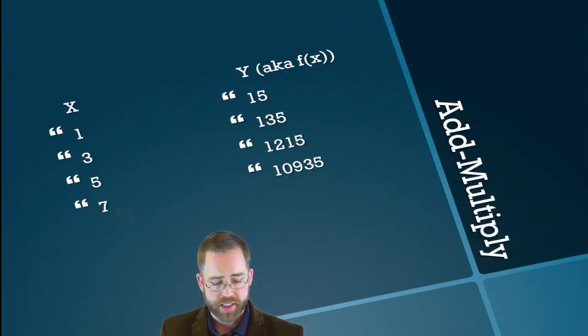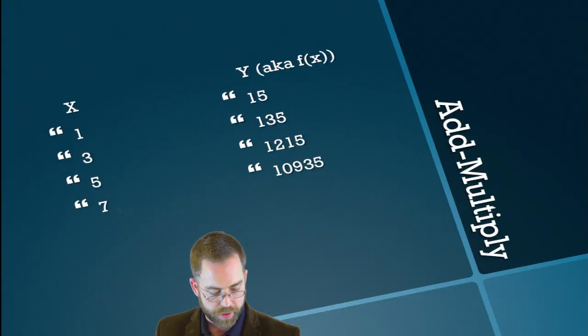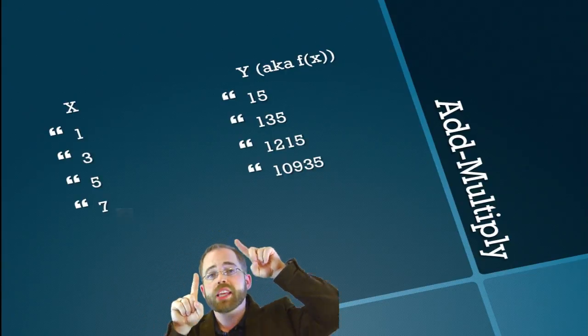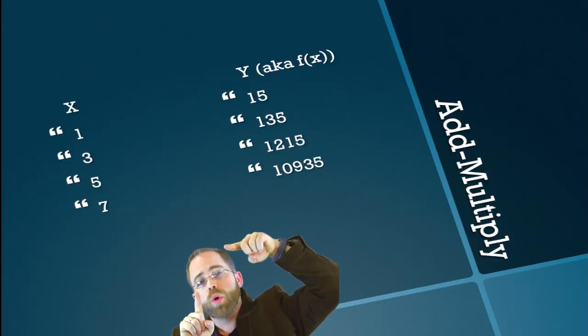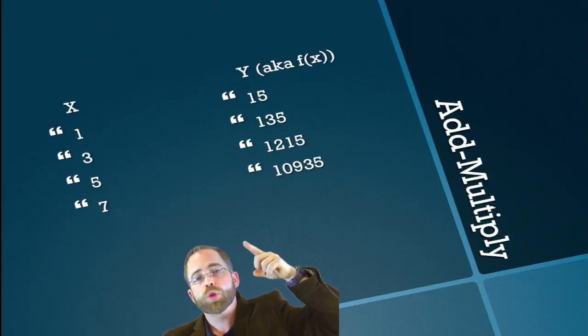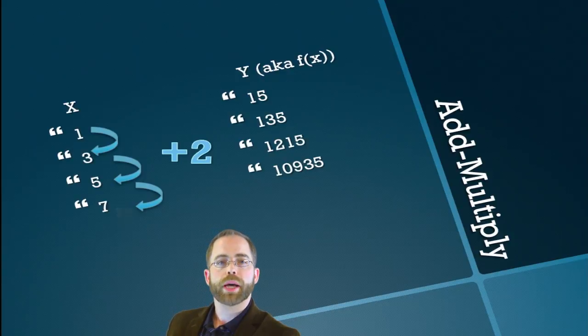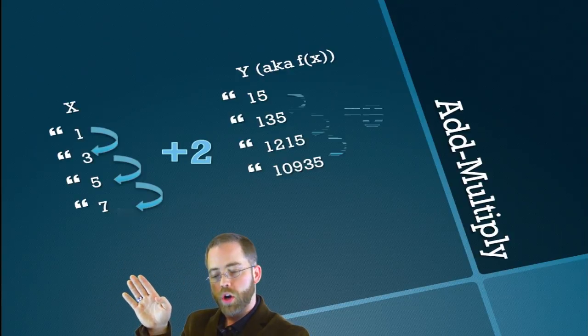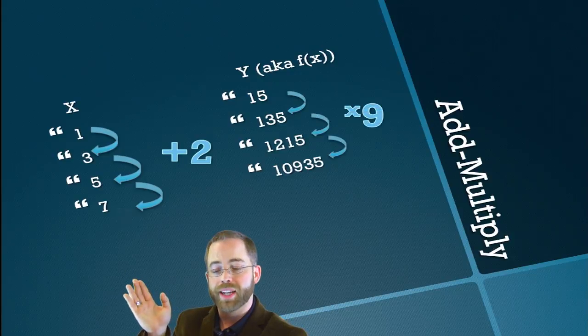135 divided by 15 is 9, and 1215 divided by 135 is 9. So if I compare any given one of these Y's to the one below it, it's always just multiply by 9.